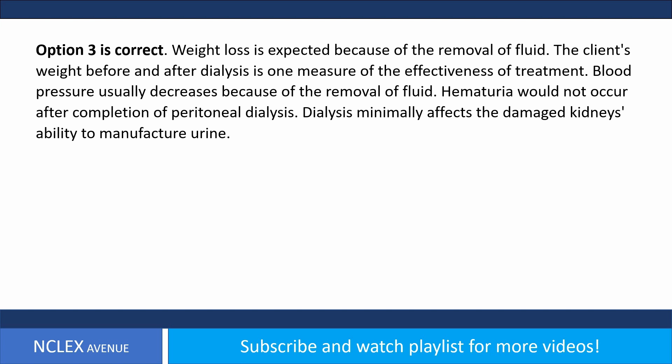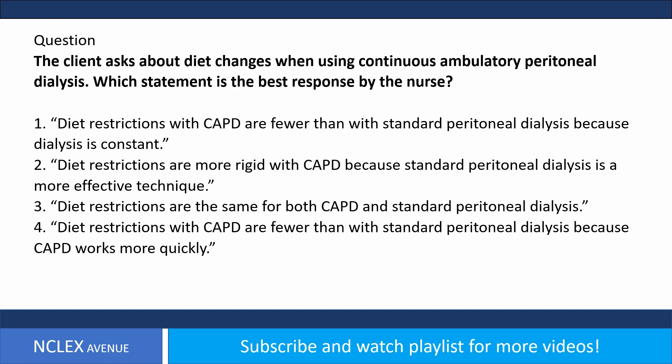Blood pressure usually decreases because of the removal of fluid. Hematuria would not occur after completion of peritoneal dialysis. Dialysis minimally affects the damaged kidney's ability to manufacture urine.